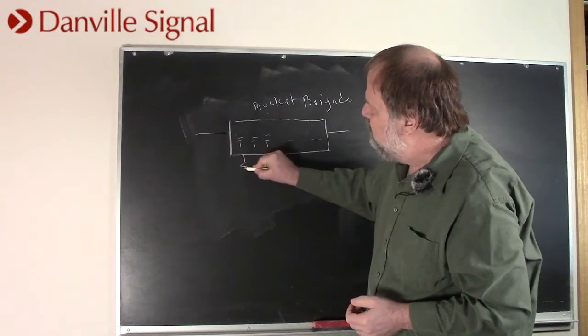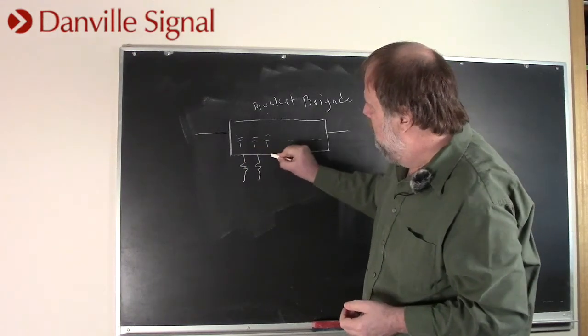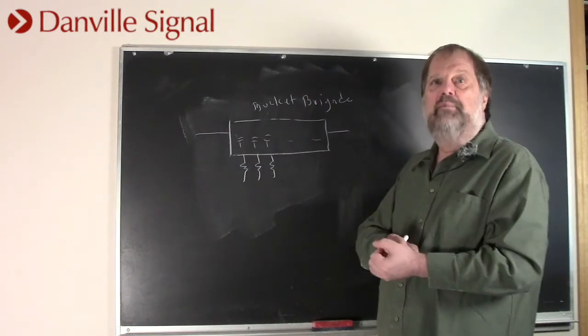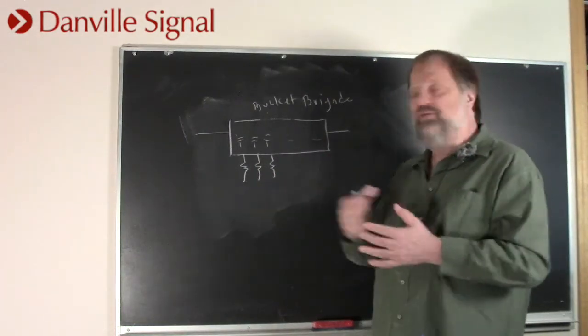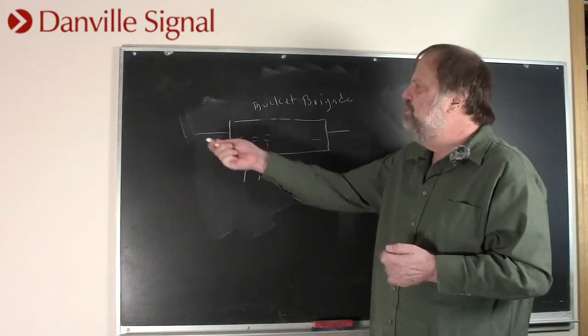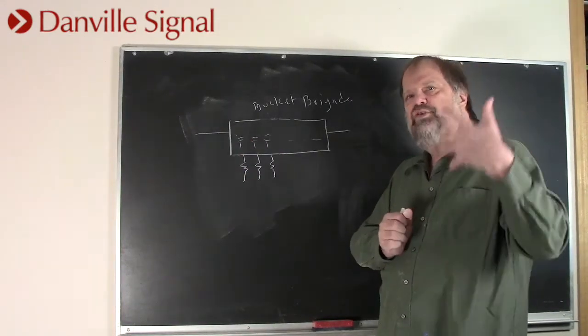And if you actually put resistors here and summed them from these outputs, this was actually a discrete time filter. They were called transversal filters, usually in those days.